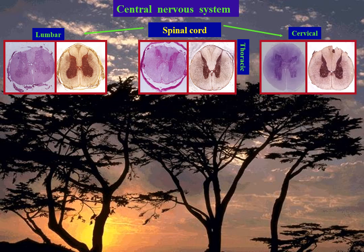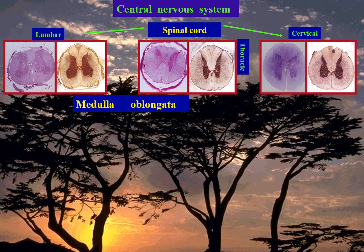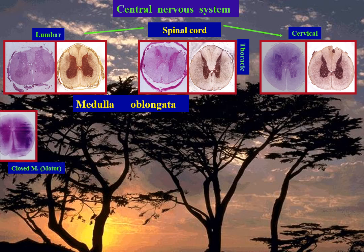Then slides of the brain stem — medulla oblongata, the lower part of the brain stem. Three levels are examined: two closed and one open. Closed medulla at motor decussation is the lower level, stained by hematoxylin and eosin and silver.